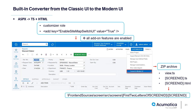For that, first enable the sitemap switch as shown on the previous slide, then go to the screen, go to Customization, and click Convert to Modern UI. Note that you will need the Customizer role, and it is recommended to have all features that may hide parts of the screen enabled for that site. When you click Convert to Modern UI, Acumatica tries to automatically convert the existing ASPX into TypeScript and produce HTML — from old UI to new UI. You click that button and get a zip archive back containing the TypeScript files and an HTML file.